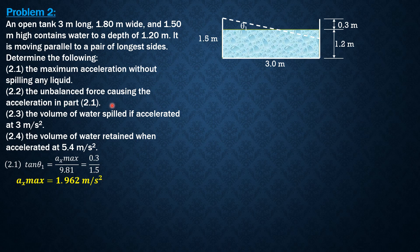For the unbalanced force causing the acceleration in part 2.1, it is mass of water in the tank times the resulting acceleration AX max, where the mass is density of water times volume. The density is 1,000 kg per cubic meter, and the volume is 3 meters times 1.2 meters times 1.8 meters.